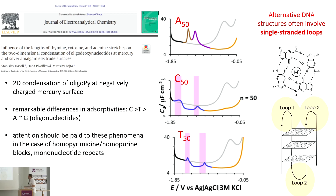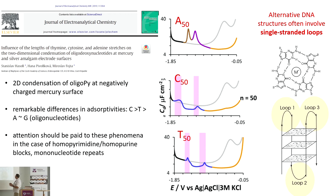For example, in this G-quadruplex, these are guanine quartets and some loops containing different bases, which often contain short stretches of pyrimidines. These stretches can strongly influence the behavior of the whole structure at the electrode due to the effects of these single-stranded loops.